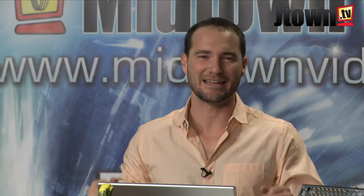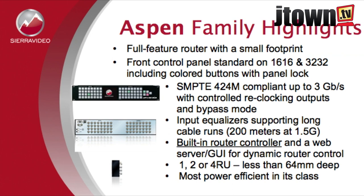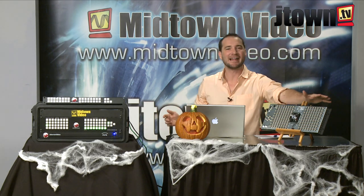One, two, or four rack units. The 16 by 16 panel is one rack unit. The 32 by 32 is two rack units. The 72 by 72 takes up four rack spaces. At an inch and a half per rack space, four rack spaces is about six inches. We are fitting all 72 inputs and all 72 outputs in six inches tall by two and a half inches deep, and 19 and a half inches wide — that's a standard rack space. Very small footprint, very powerful routing.